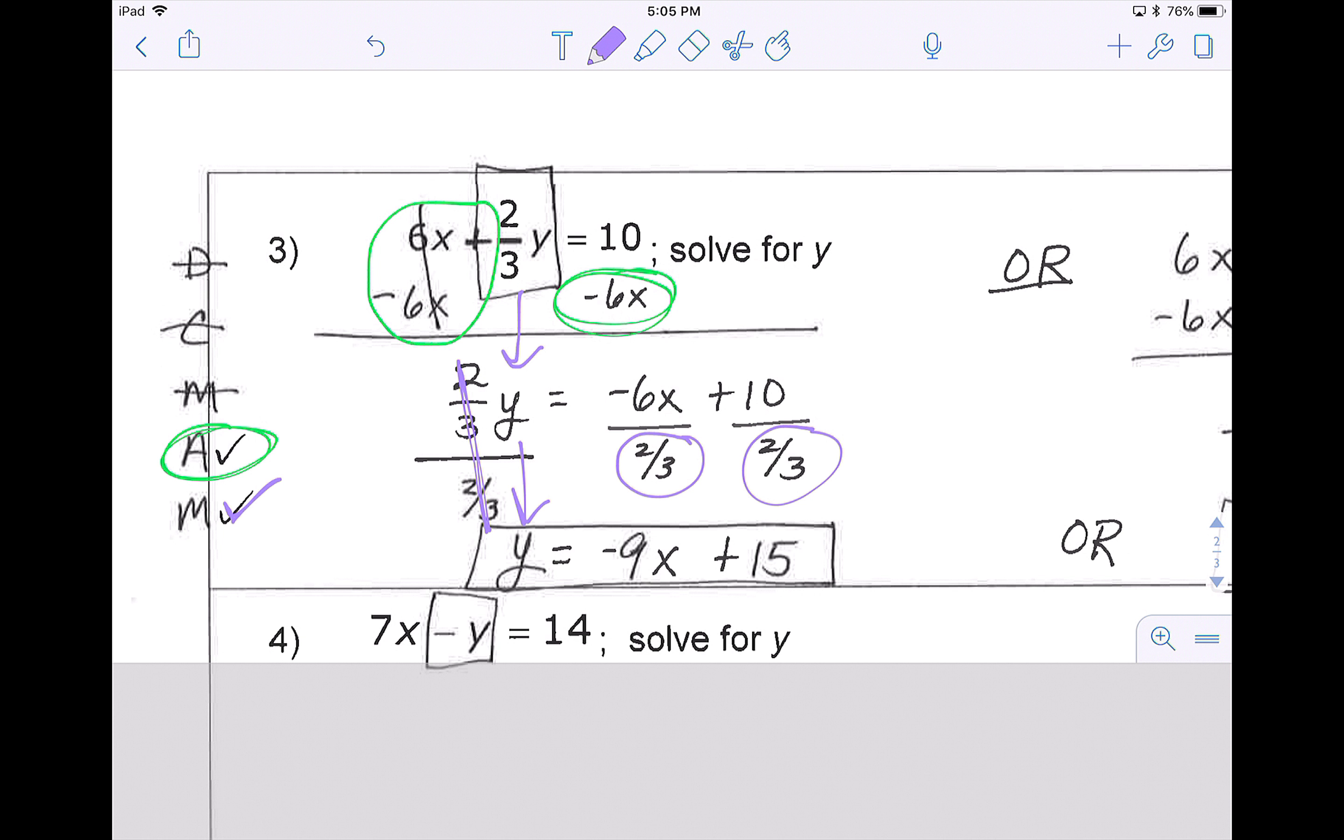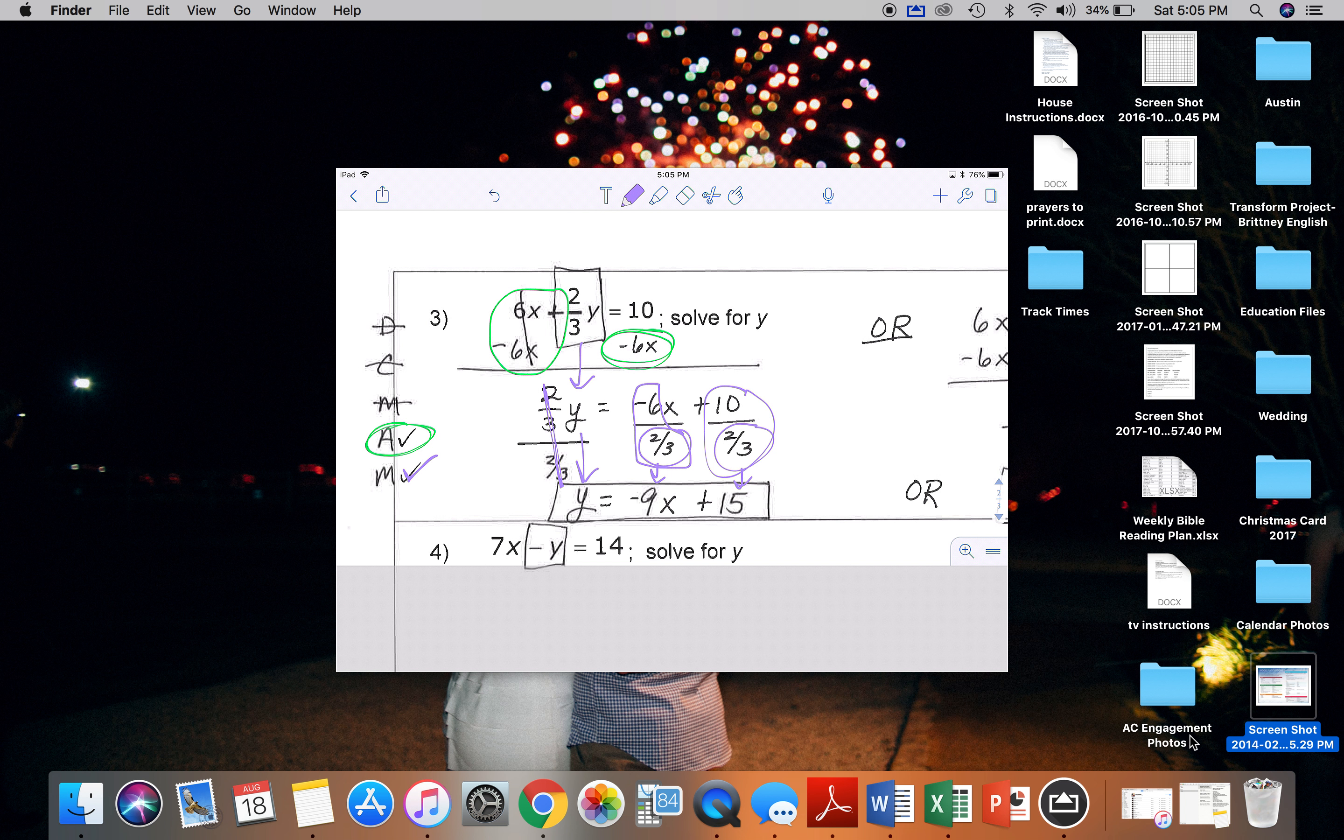So on the left side, my y is the only piece that's left. In the calculator, you can do 6 divided by 2 thirds and get negative 9, and 10 divided by 2 thirds and get 15.